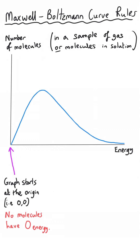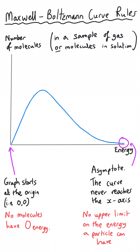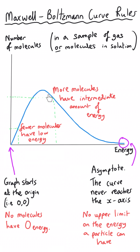The next feature is all the way at the other end. This graph is what's called an asymptote, meaning the blue curve will never reach the y-axis. It is theoretically possible that a molecule of gas can have an infinite amount of energy. Clearly, it gets less and less likely that molecules will have a huge amount of energy, but theoretically it is possible. So this curve must never actually reach the y-axis because there is no theoretical upper limit. We've got fewer molecules with very high energy than with intermediate energy.